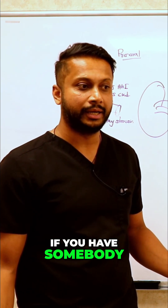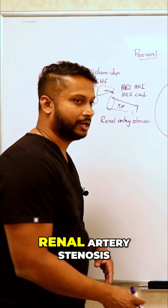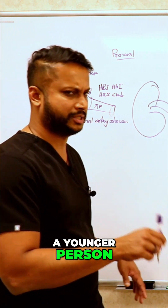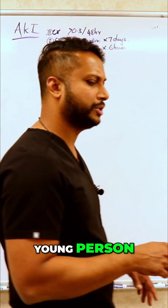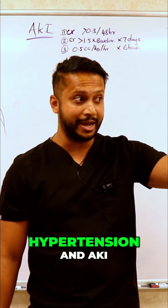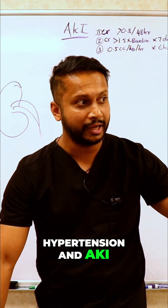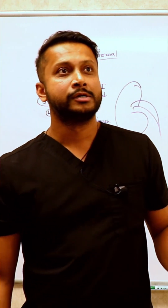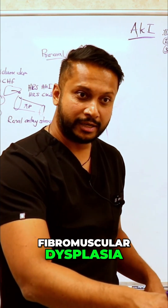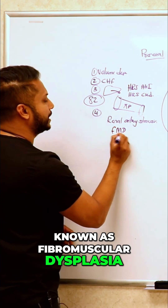If you have somebody who's older, you need to see if the patient has renal artery stenosis. But if it was a younger person who had renal artery stenosis and presented with hypertension and AKI, what would you be thinking about? Fibromuscular dysplasia — you have a condition known as fibromuscular dysplasia.